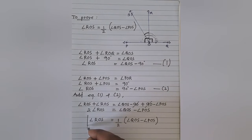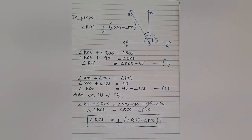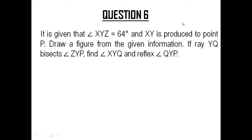I hope this is pretty much clear to you. Maybe we can mark this as an important question from an examination point of view. Now let's get into the next question — question number 6, the last question of Exercise 6.1. The question says: it is given that angle XYZ is equal to 64 degrees, and XY is produced to point P. Draw a figure from the given information. If ray YQ bisects angle ZYP, find angle XYQ and reflex angle QYP. Let us get to the solution of this particular question.